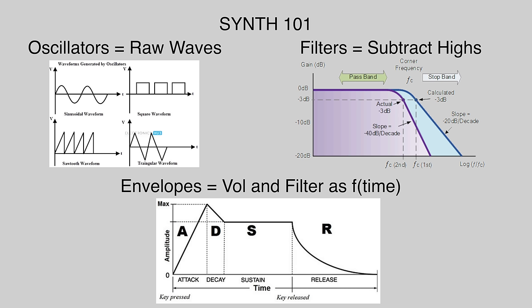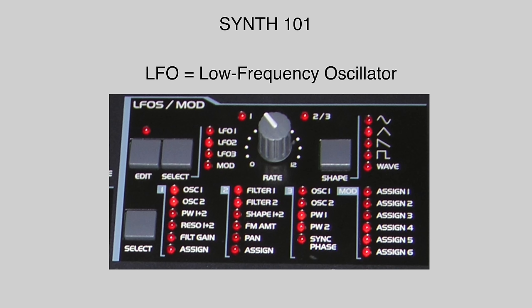Beyond the envelopes there are other ways to modulate or vary the sound you've created. The primary amongst these are low frequency oscillators, which are oscillators that move slower than the speed of audible pitch, and that can be assigned to manipulate the pitch, volume, or shape of your main sound as it plays. LFOs are the basis of a lot of effects that are also associated with guitars, such as tremolo, vibrato, and flanging.